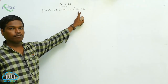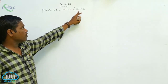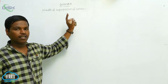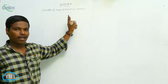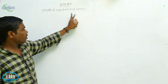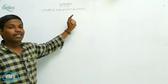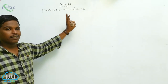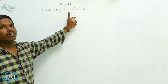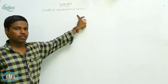Principle of Superposition of Waves. When two or more waves travelling in a medium along the same direction or in the opposite direction superimpose on each other, the resultant displacement is the algebraic sum of the displacements. This is called the principle of superposition of waves.